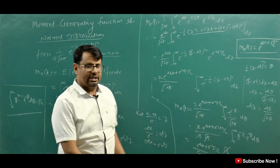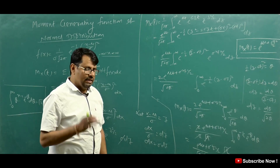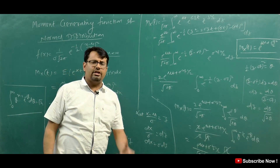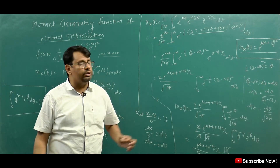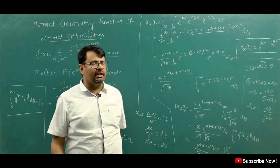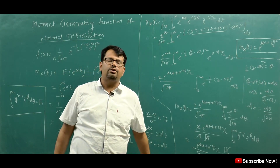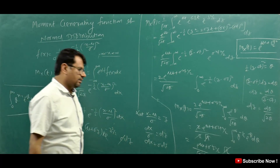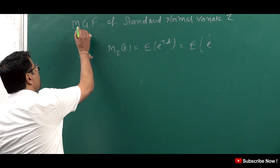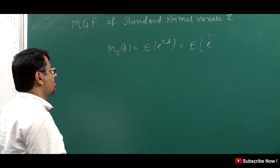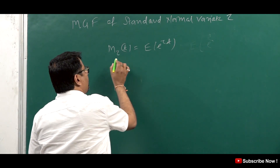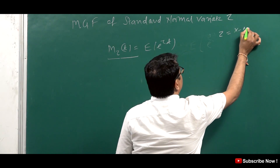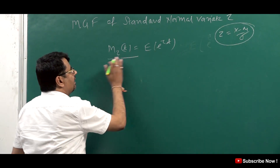Now, the mean and variance can be found using the MGF of the normal distribution. For the standard normal distribution, mu equals 0 and sigma equals 1. The standard normal variable is Z, and we need to find MGF of Z, which is M_Z(t) equals E[e to the power Zt]. We use the standardization formula z equals x minus mu upon sigma.